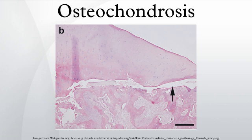Osteochondrosis is a family of orthopedic diseases of the joint that occur in children and adolescents and in rapidly growing animals, particularly pigs, horses, and dogs. They are characterized by interruption of the blood supply of a bone, in particular to the epiphysis, followed by localized bony necrosis, and later regrowth of the bone. This disorder is defined as a focal disturbance of endochondral ossification and is regarded as having a multifactorial etiology, so no one thing accounts for all aspects of this disease.